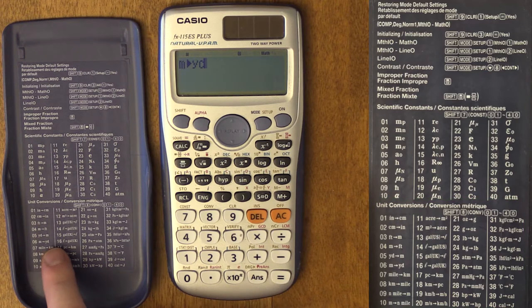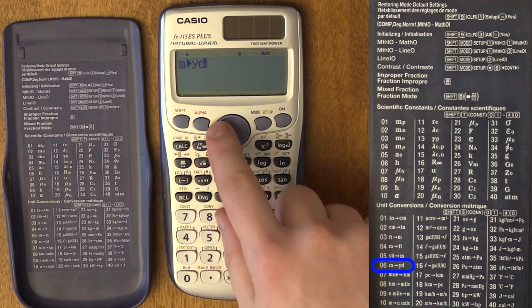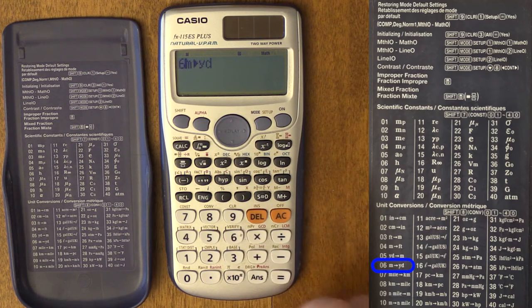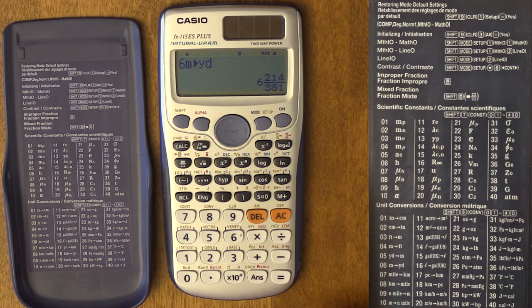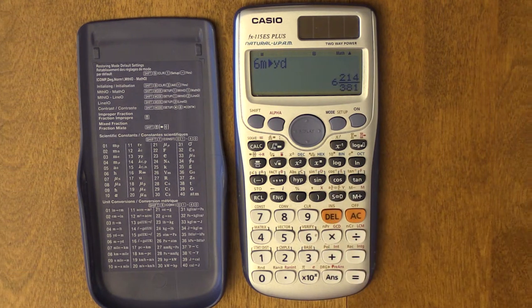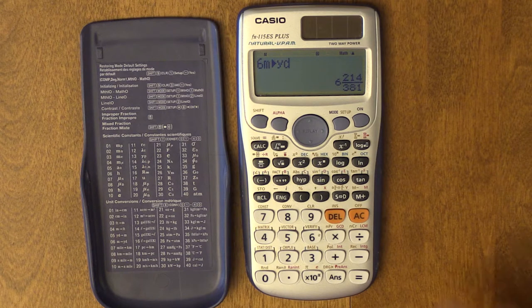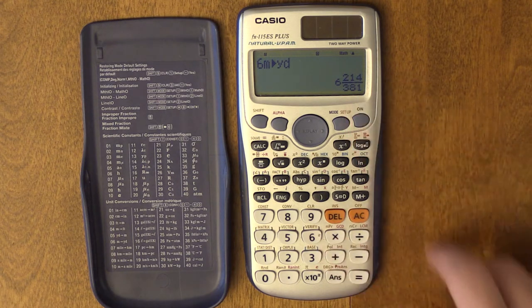If you want to do meters to yards, I type in 06, and it'll pop up meters to yards. Let's say I want to do 6 meters and I want to know how many yards it is. You do 6M equals, and it'll give you 6 and some fraction. Another reason why I love this calculator is the display is really easy to use. Here you have 6 and 214 over 318.